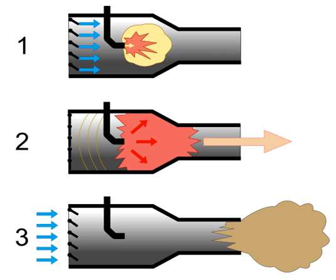A pulsejet engine is a type of jet engine in which combustion occurs in pulses. A pulsejet engine can be made with few or no moving parts, and is capable of running statically — it does not need to have air forced into its inlet, typically by forward motion. Pulsejet engines are a lightweight form of jet propulsion, but usually have a poor compression ratio, and hence give a low specific impulse.